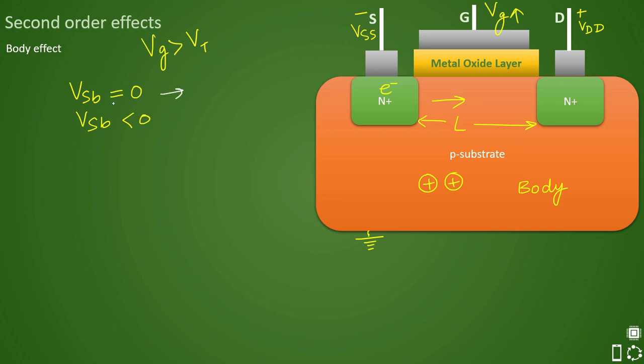Hence in summary when VSB is zero you do not have any body effect. So at that time you don't see any body effect. But let us say if you have VSB lesser than zero and let us say for a moment you see the spike in ground level of your VSB.